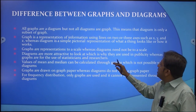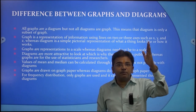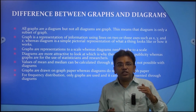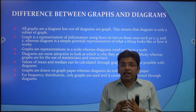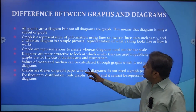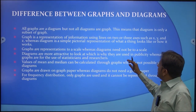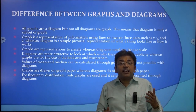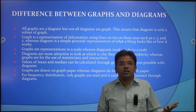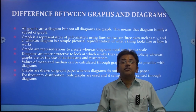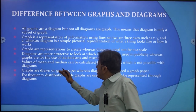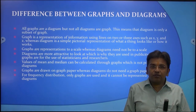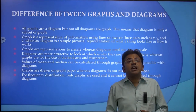Graphs are drawn to a scale whereas diagrams need not be scaled — for all graphs you require a scale such as 0, 5, 10, 15 or 100, 200, 500. Diagrams are more attractive to look at, which is why they are used in publicity, whereas graphs are used by statisticians and researchers. Values of mean and median can be calculated through graphs, which is not possible with diagrams. Graphs are drawn on graph paper whereas diagrams do not need graph paper. For frequency distribution, only graphs are used and it cannot be represented through diagrams.